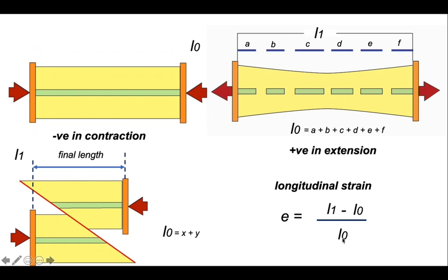So the parameter E, elongation, is a positive value in extension but a negative value in contraction. Because in extension, L0 is shorter than L1, so the expression on top of the equation is positive. Whereas in contraction, the final length is shorter than the original length. Therefore, the top term in that expression is negative, the whole expression becomes negative.